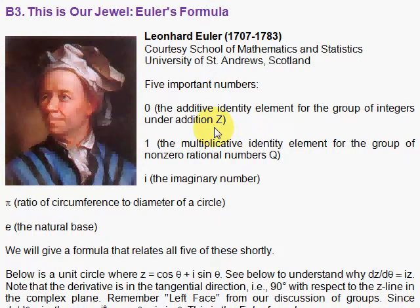Now, the Euler's formula will relate five very important numbers in mathematics. One, zero, the additive identity element in the group of integers. If you take any integer and add it to zero, you get the same thing back. That's our identity element under addition. And one, the multiplicative identity element for the group of non-zero rational numbers. And this one times any of the ratios that you can think of will get back the same ratio.